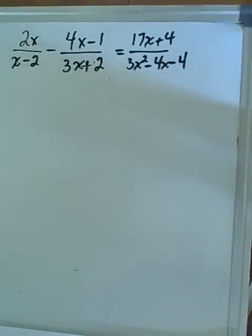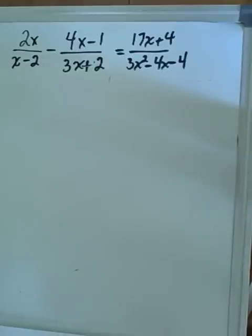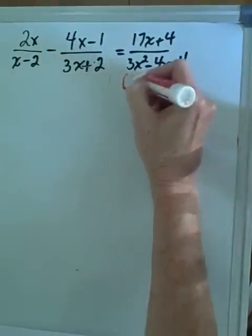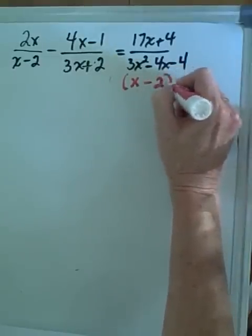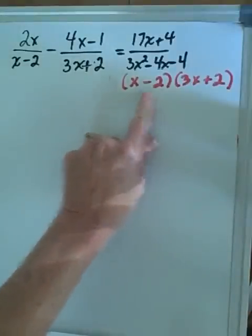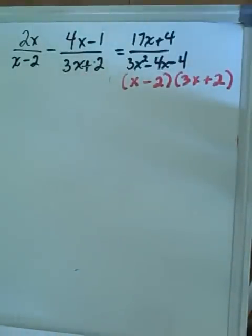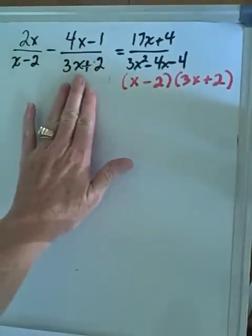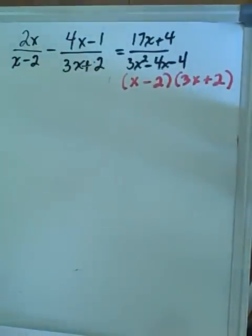Here's a more complicated rational polynomial equation. In your homework you will have a few of these. Our first step is to factor the denominators to find a common denominator. The first two are already simplified. The last denominator factors using bottoms up into x minus 2 times 3x plus 2. Since x minus 2 is in one denominator and 3x plus 2 is in another, our common denominator is x minus 2 times 3x plus 2. We multiply every term by this common denominator.